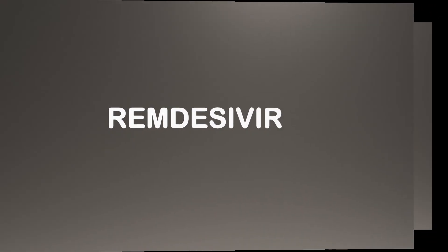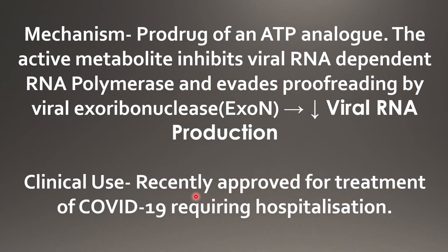Next flashcard — remdesivir. It is a pro-drug of an ATP analogue. The active metabolite inhibits viral RNA-dependent RNA polymerase and evades proofreading by viral exoribonuclease, hence decreasing viral RNA production. It was recently approved for the treatment of COVID-19 patients requiring hospitalization.